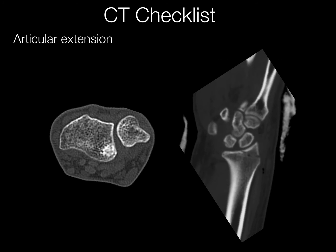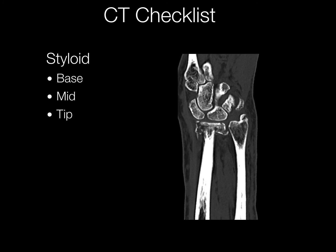Articular extension is important to mention. Does it go to the DRUJ, does it go to the distal radius, or does it go to both? Something we usually mention is the styloid fracture. If possible, it can be useful to determine whether this involves the base, mid, or tip of the ulnar styloid.